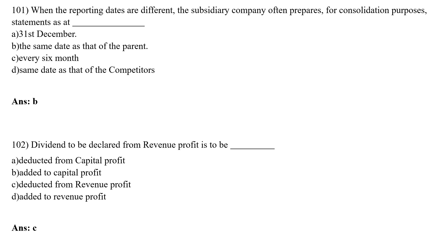The dividend to be declared from revenue profit is to be: Option A — deduct from capital profit; Option B — added to capital profit; Option C — deduct from revenue profit; Option D — added to revenue profit. The correct answer is Option C — deduct from revenue profit.